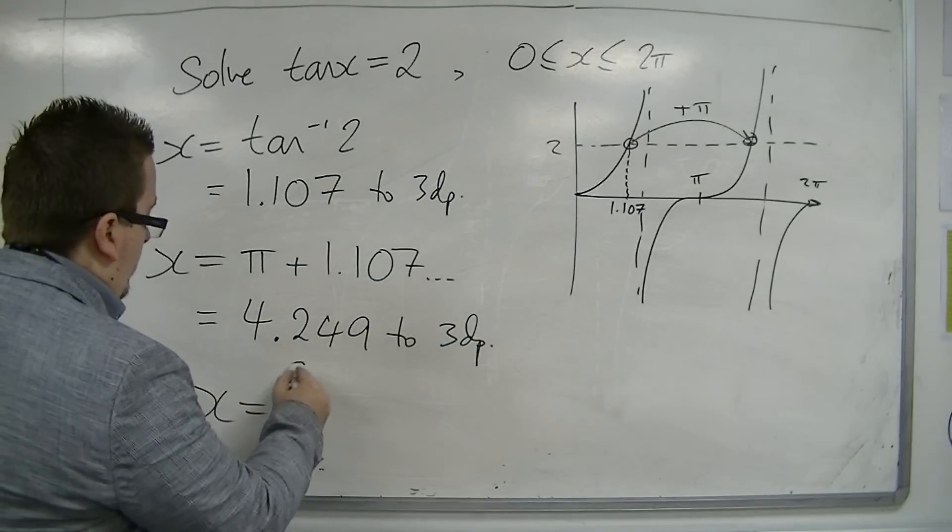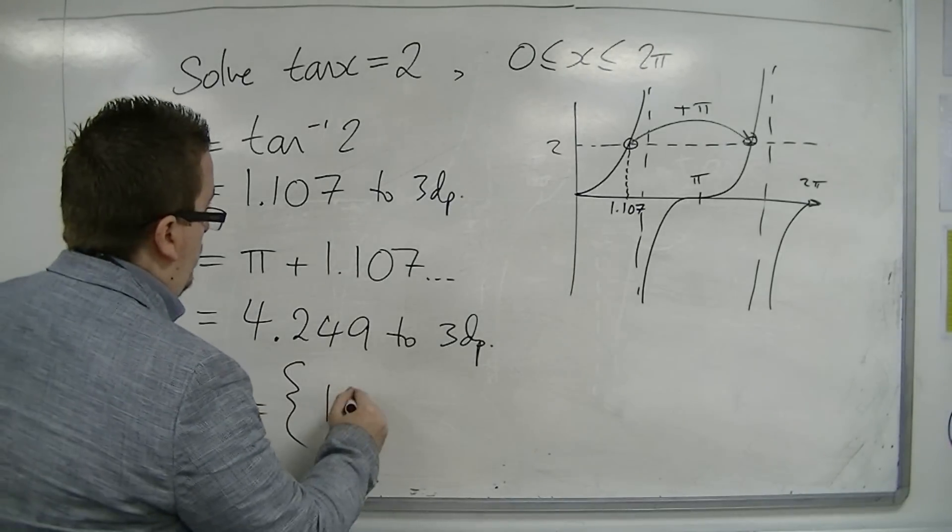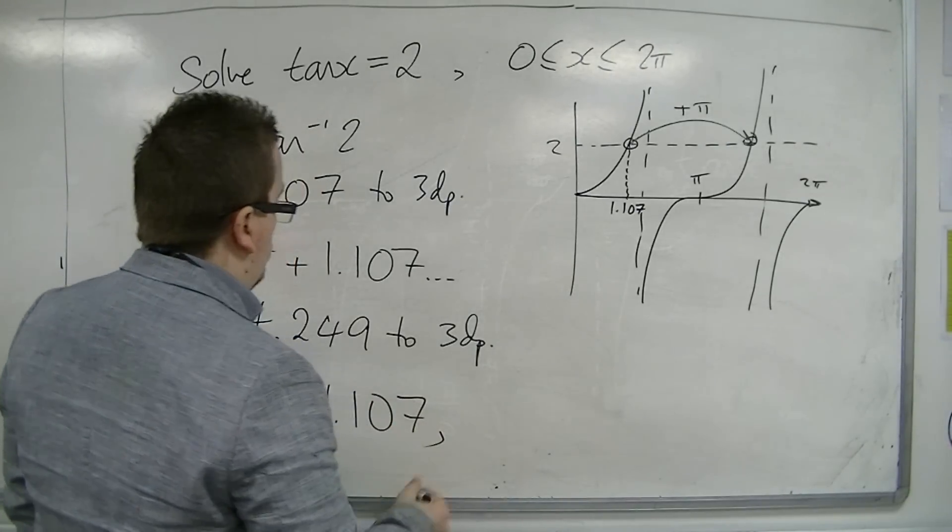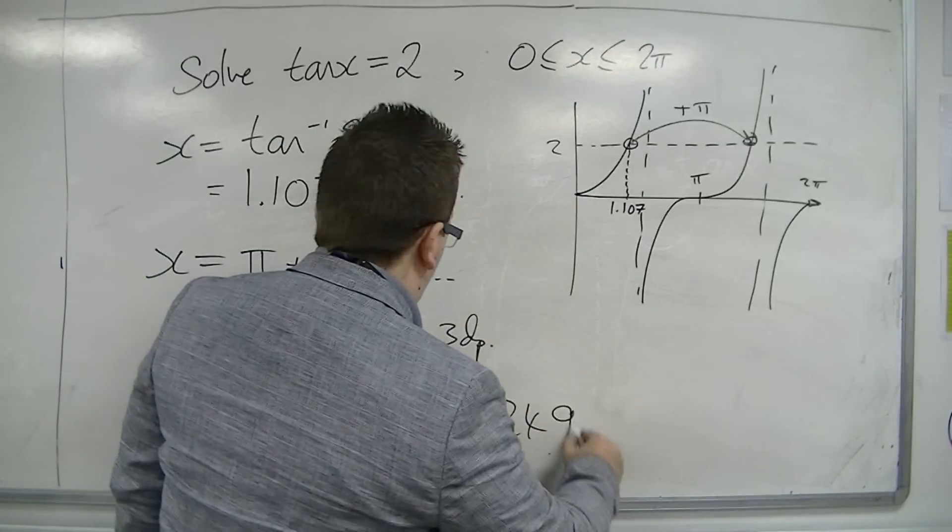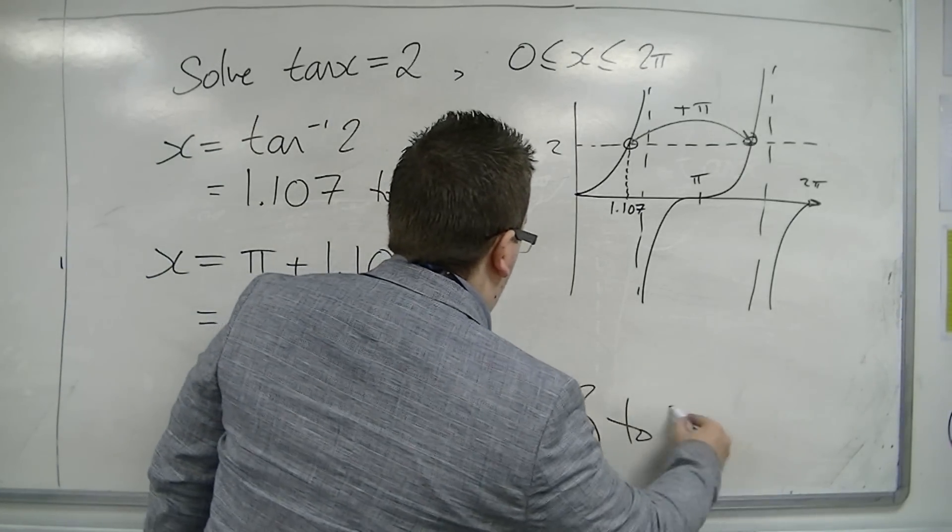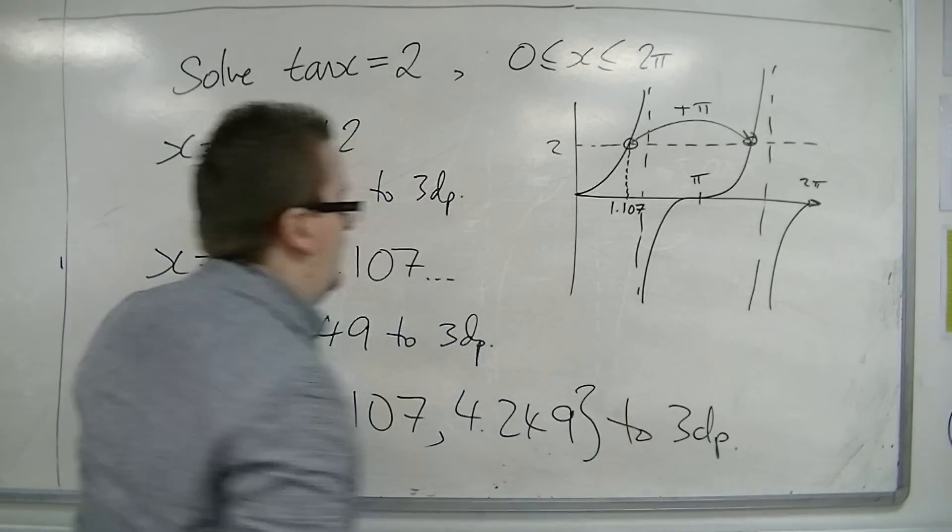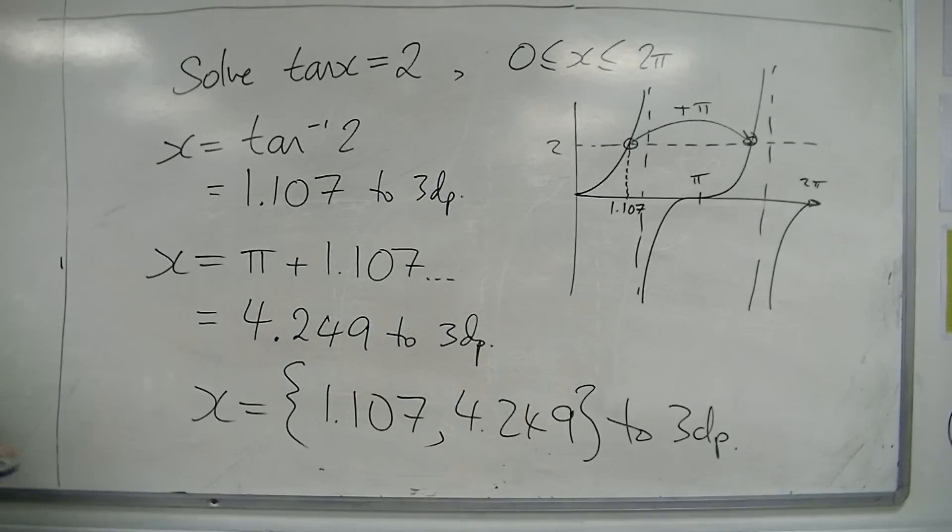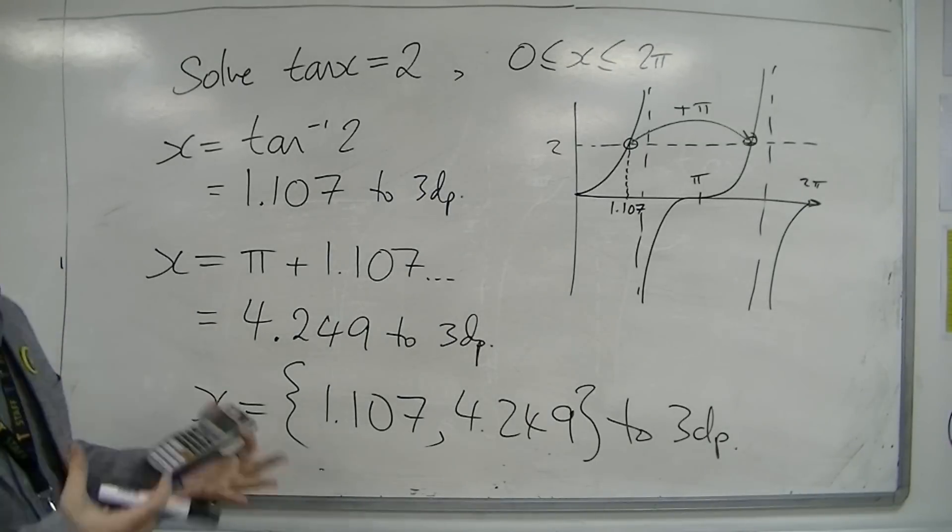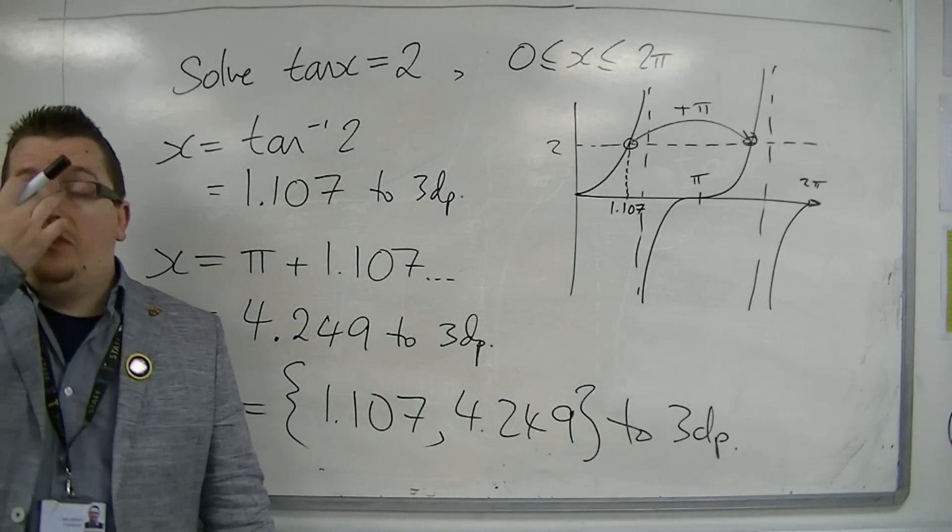So, in nice curly brackets, the two solutions that I'm looking for are 1.107 and 4.249 to three decimal places. Okay? And that is how we can work with the tan curve, much like we did with sine and cosine.